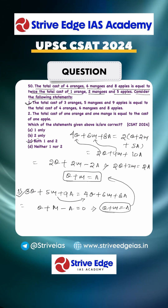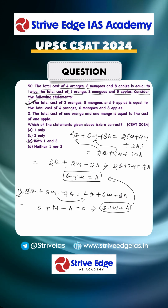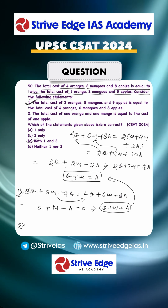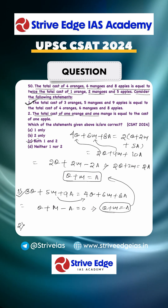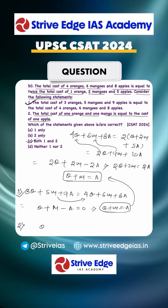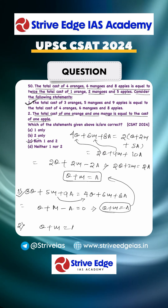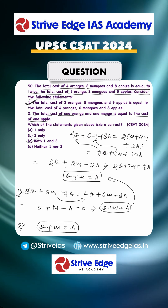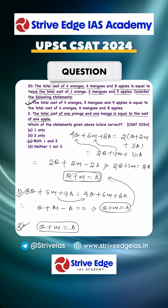Option 2 states that the total cost of 1 orange plus 1 mango equals the cost of 1 apple — that is, Q plus M equals A. This directly satisfies our basic equation, so option 2 is also correct.